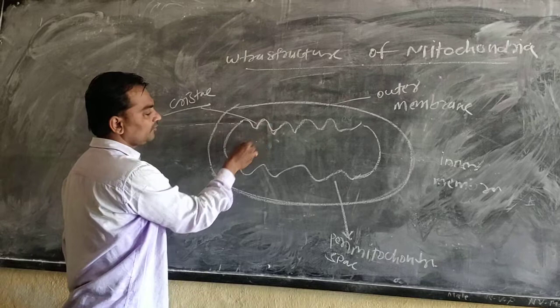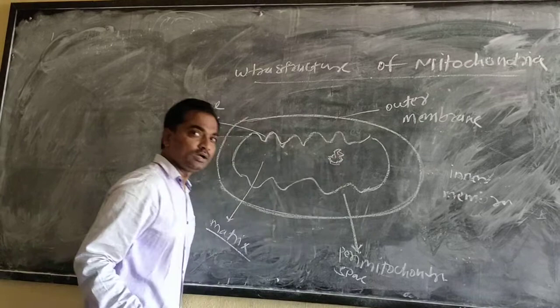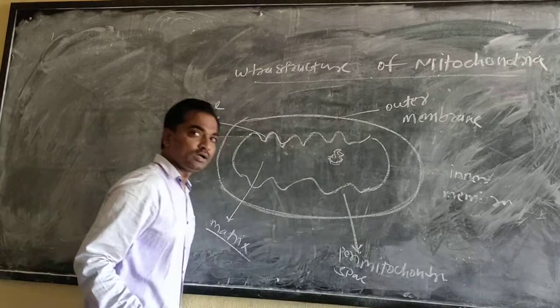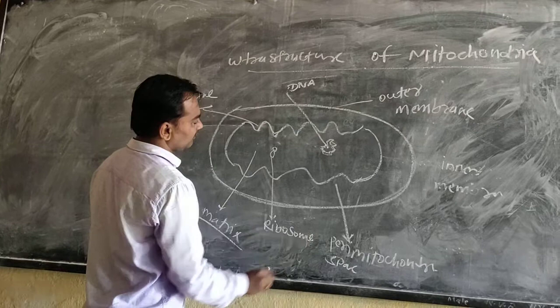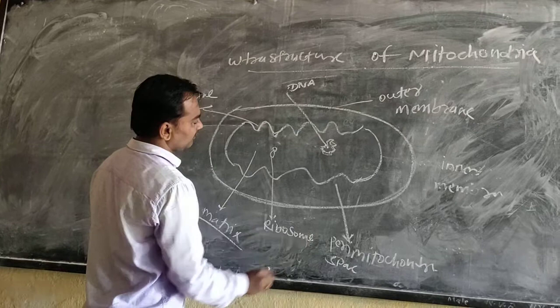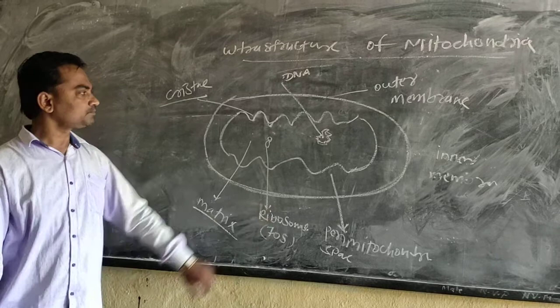The inner part enclosed by the inner membrane is called the matrix — more correctly, the mitochondrial matrix. The matrix contains a circular double-stranded DNA. Mitochondria have their own DNA, which is circular double-stranded and present inside the mitochondrial matrix. It also contains ribosomes. While eukaryotic cells have 80S ribosomes, in the case of mitochondria the ribosome is of the 70S type. Don't forget: the mitochondrial ribosome is 70S type.